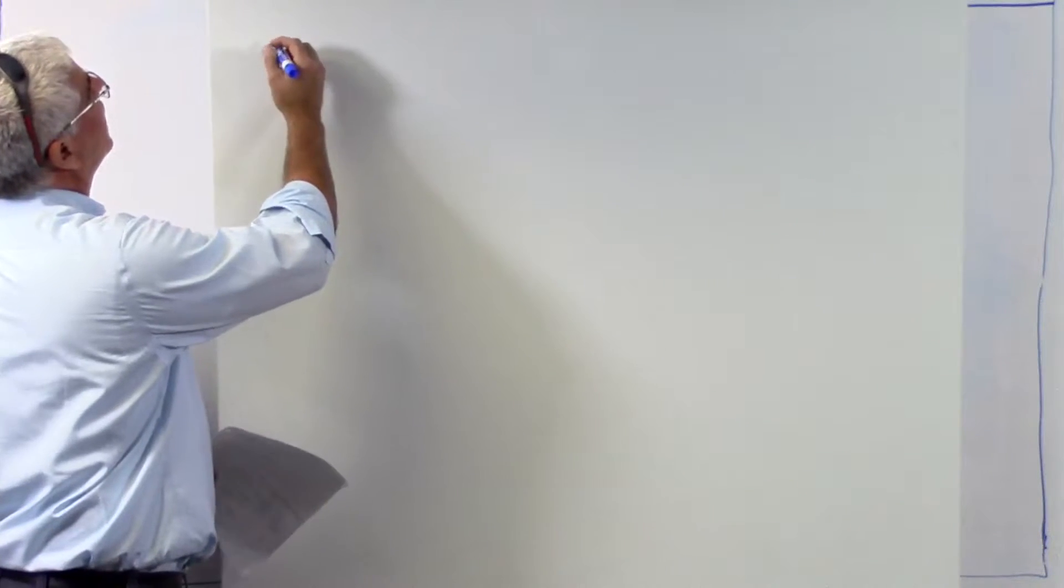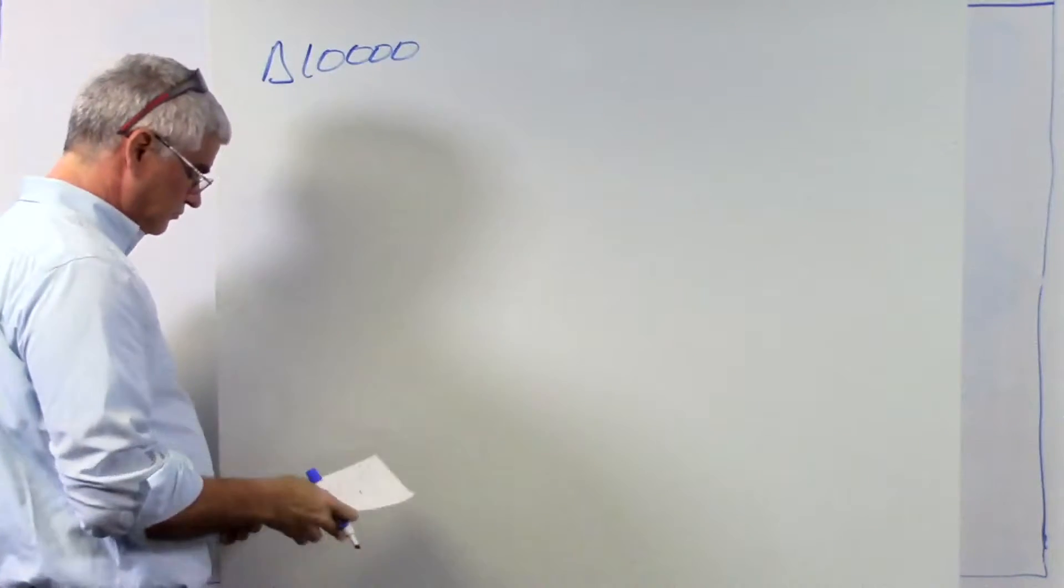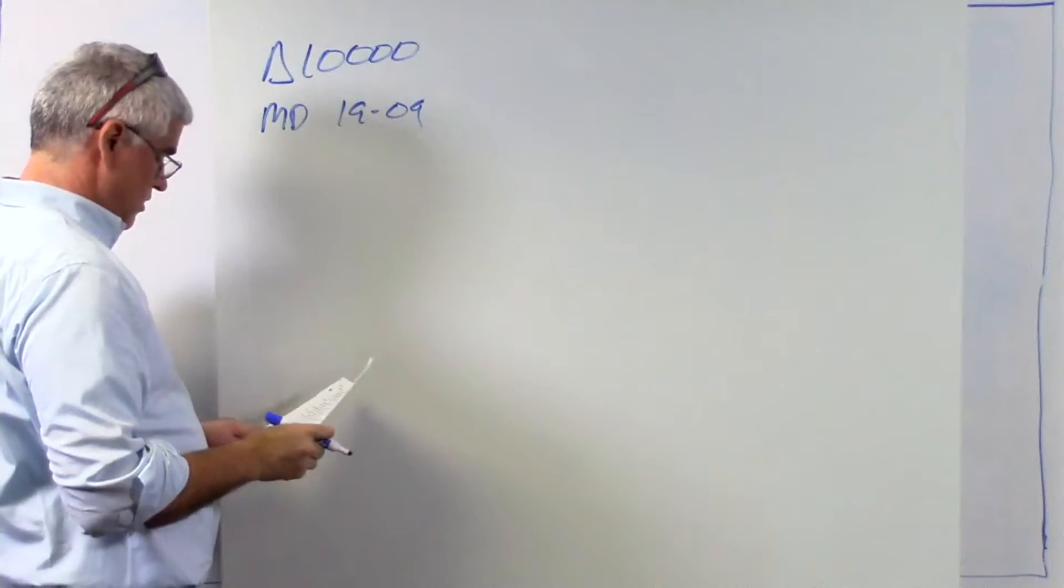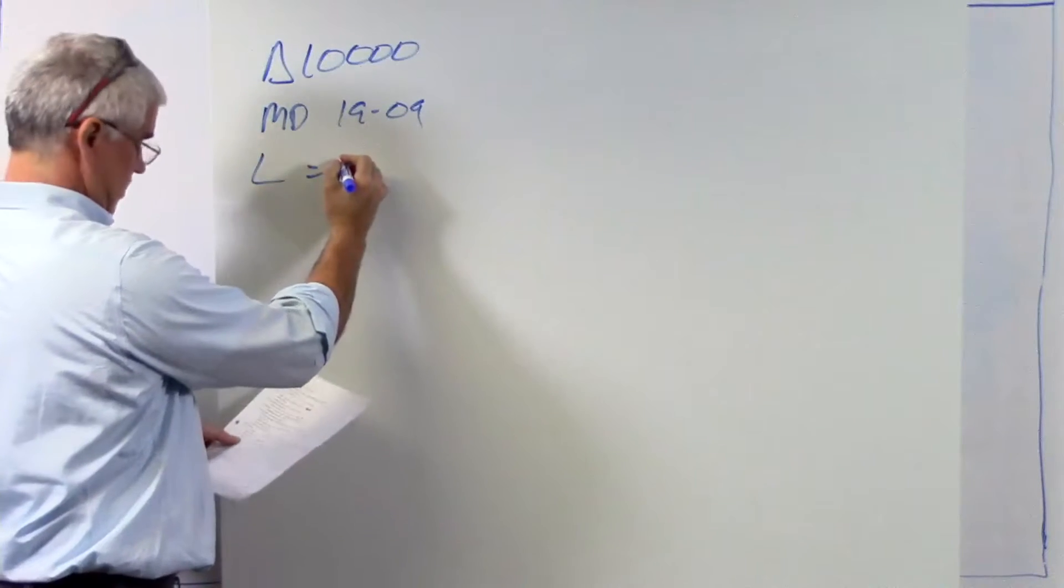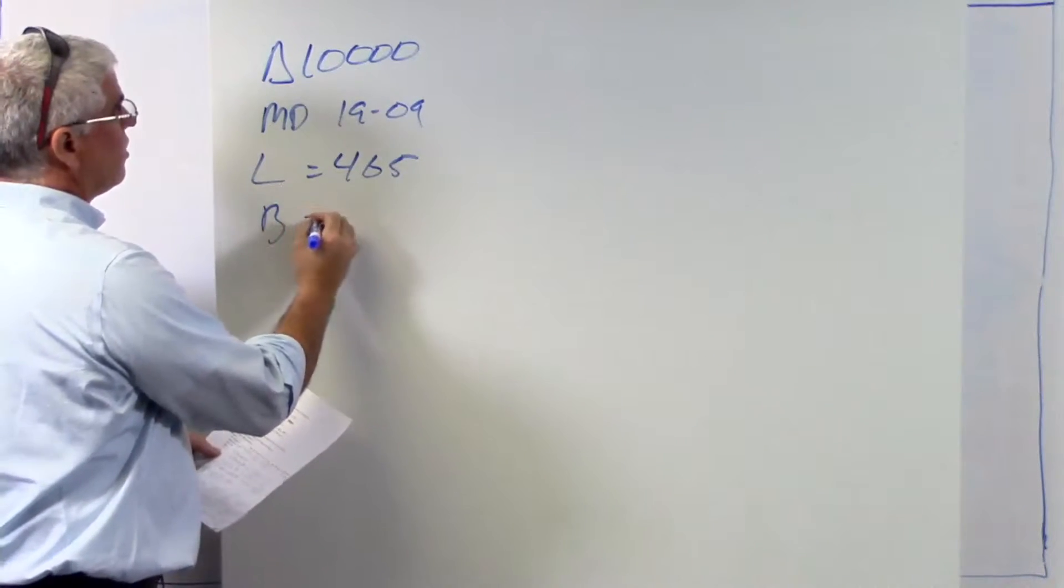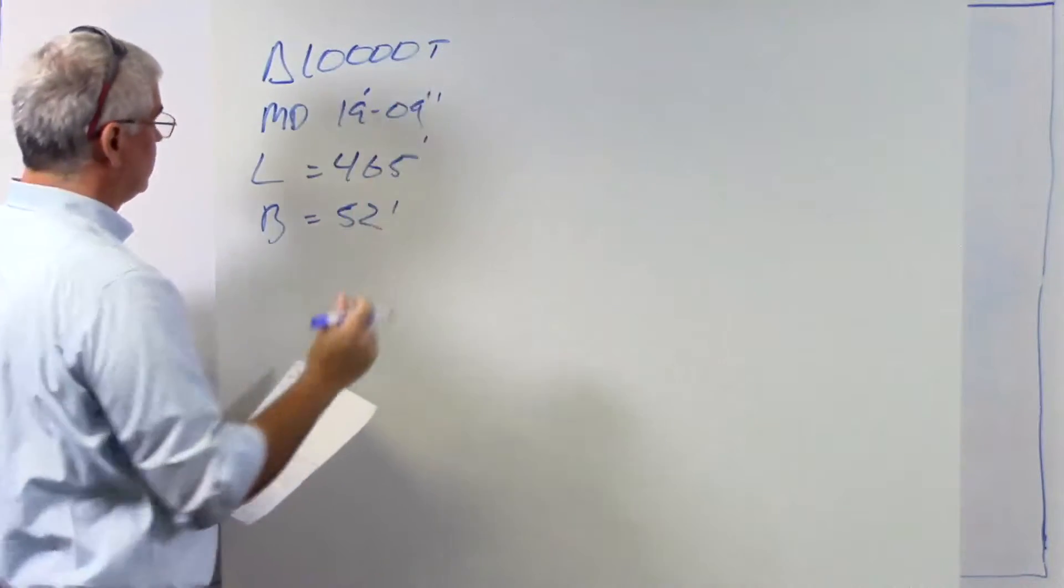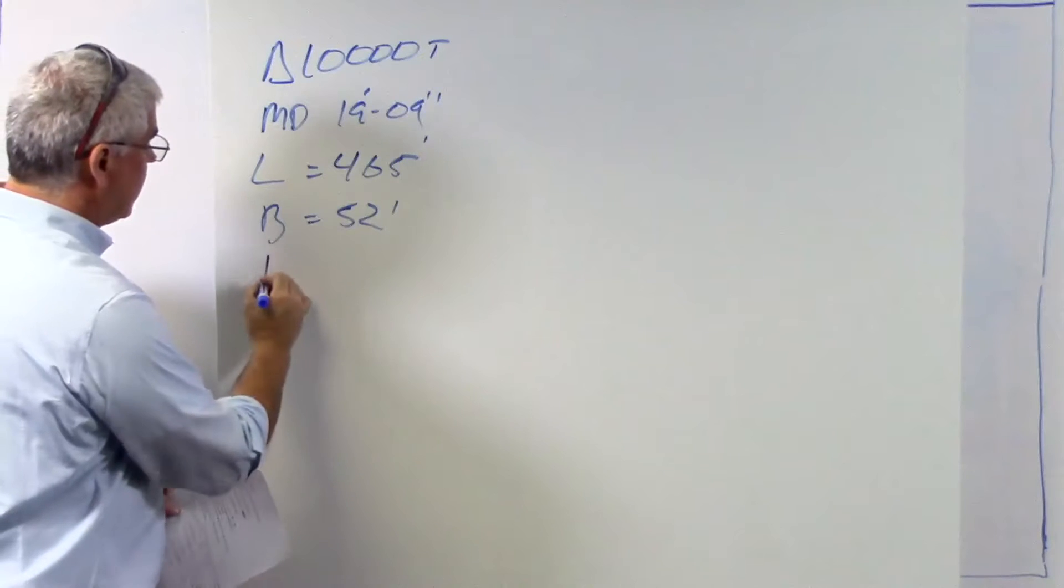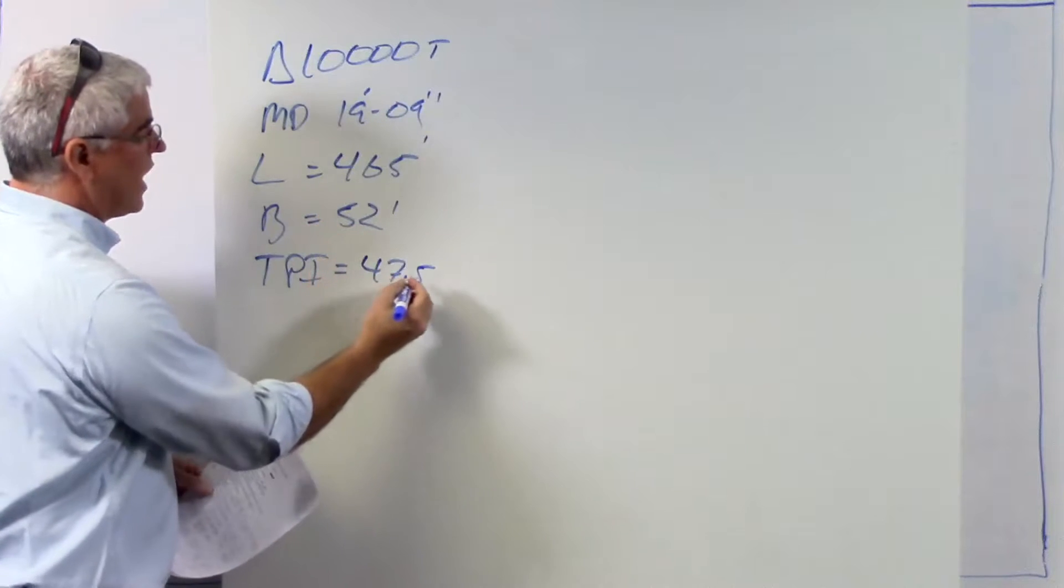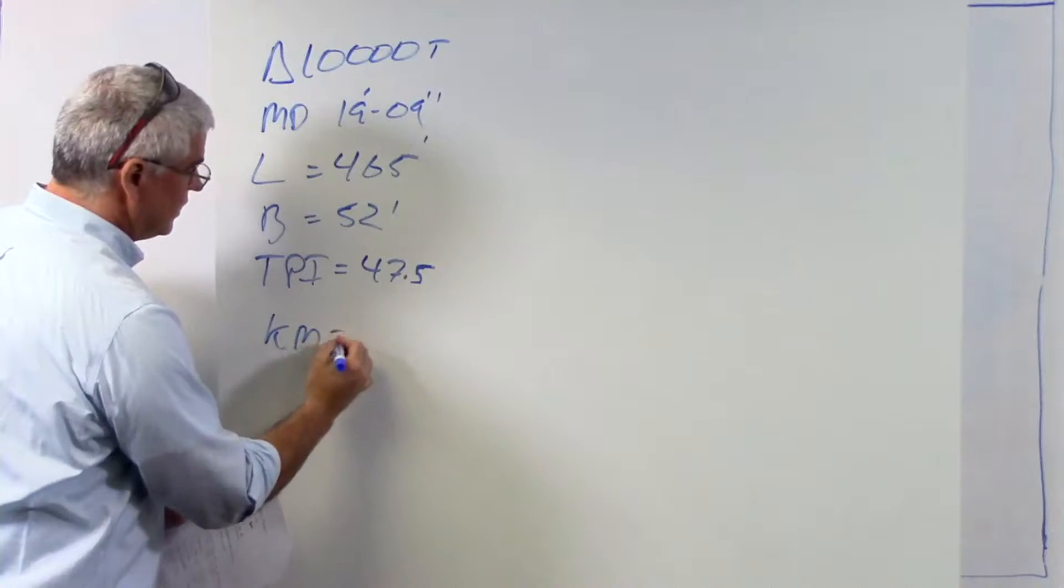So imagine you had a vessel that displaced 10,000 tons. Its mean draft is 1909, its length is 465, and its beam 52. These are feet, feet in inches, 10,000 tons. TPI, we're going to need that, is 47.5. I can look that up in the deadweight table for my vessel. And km is what?